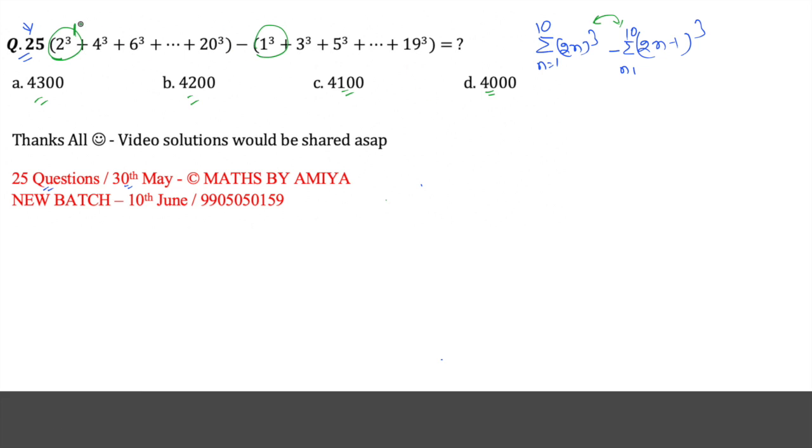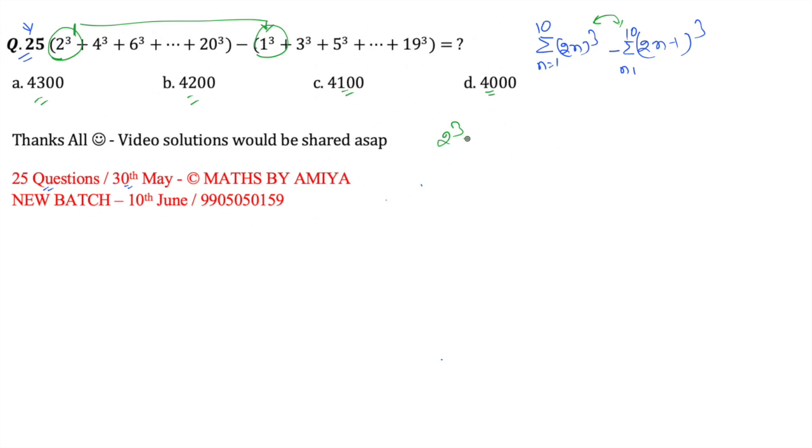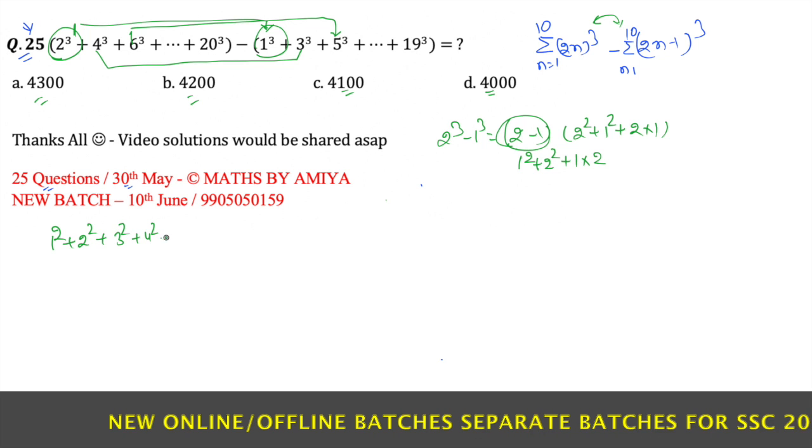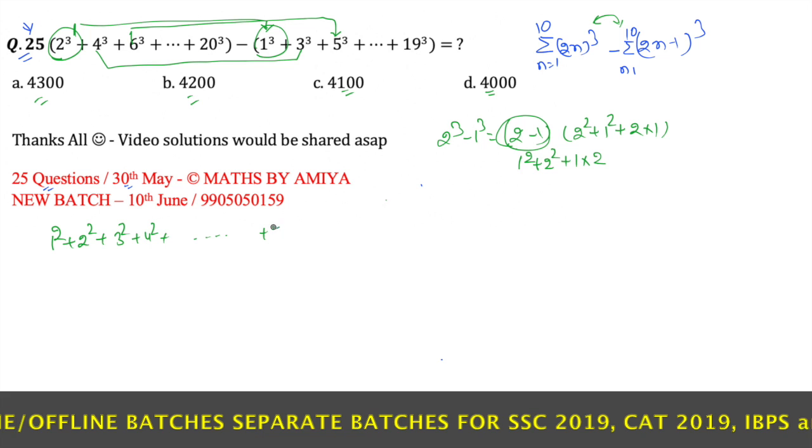So one number from here, one number from here. If you go for 2 cube minus 1 cube, this one is 2 minus 1 and the 2 square plus 1 square plus 2 into 1. So if we take like this for one from the first bundle, second from the second bundle, this is 1 square plus 2 square plus 1 into 2. So this one is 1 square plus 2 square plus 3 square plus 4 square dot dot dot till 20 square.